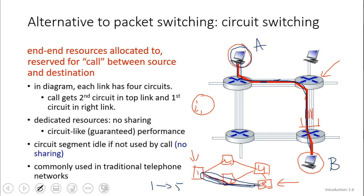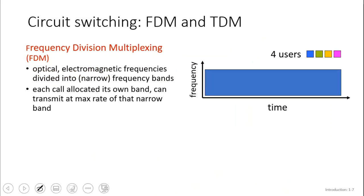Now for a bigger view of circuit switching, we'll start our discussion with what we call Frequency Division Multiplexing. Multiplexing just means we're sending multiple signals into the same channel. On one side of the channel you have data coming in.